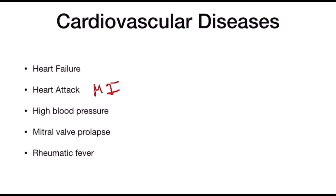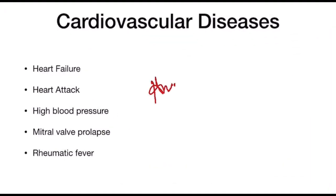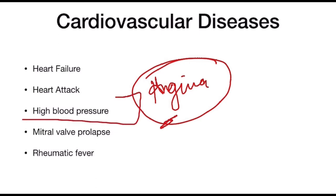Angina pectoris is a brief substernal pain. Patients with angina may be taking medications such as nitroglycerin, beta-adrenergic blocking agents, and calcium channel blockers, and a stress reduction protocol is necessary — this will be discussed further in upcoming videos. Regarding high blood pressure, it should be identified in the history. Failure to take these medications can cause elevated blood pressure, and associated signs and symptoms include visual changes, dizziness, spontaneous nosebleeds, and headaches.